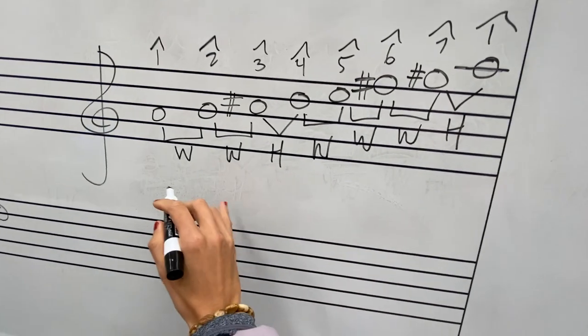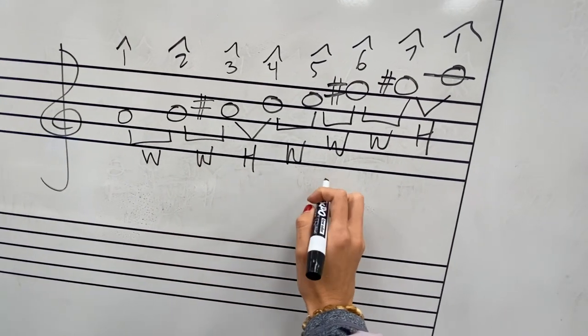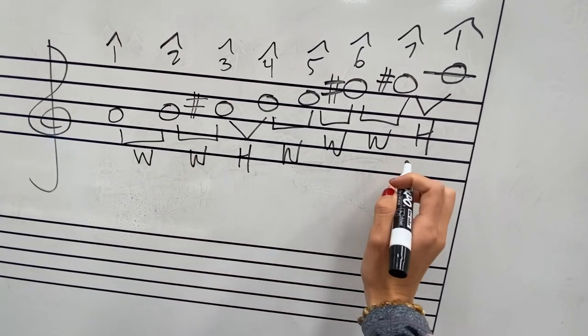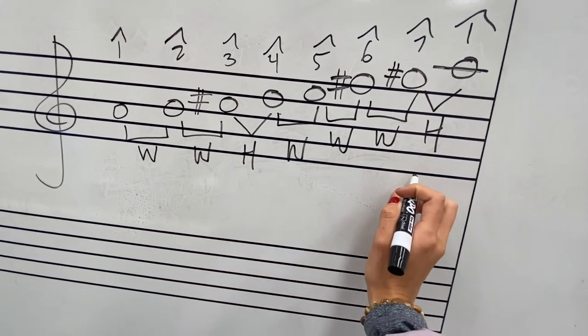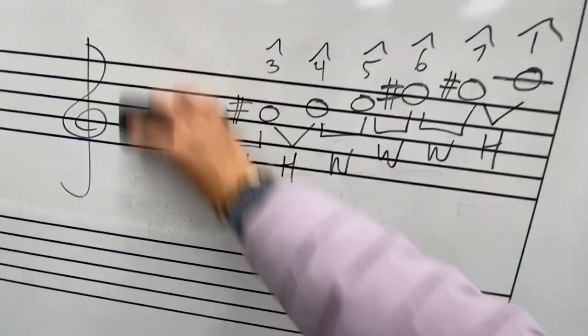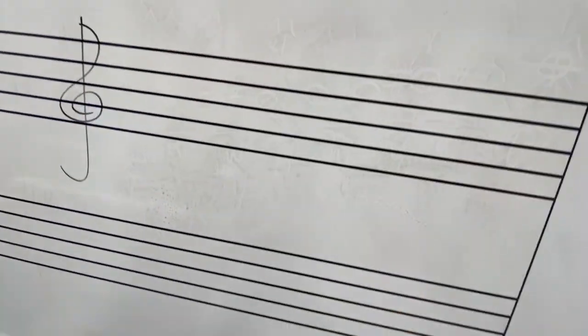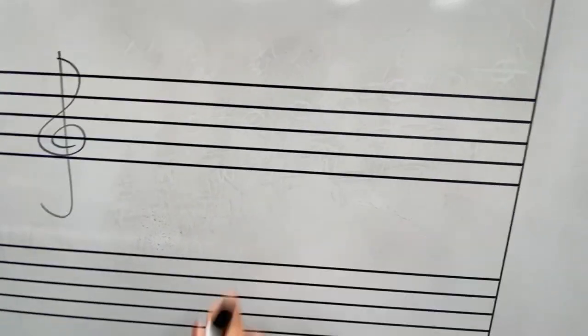So our pattern: whole step, whole step, half step, whole step, whole step, whole step, half step. That is our major scale pattern, and we can do it with any key.